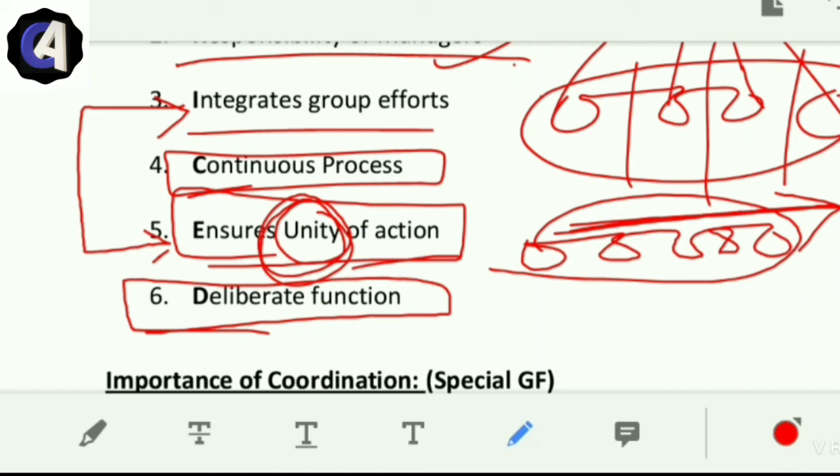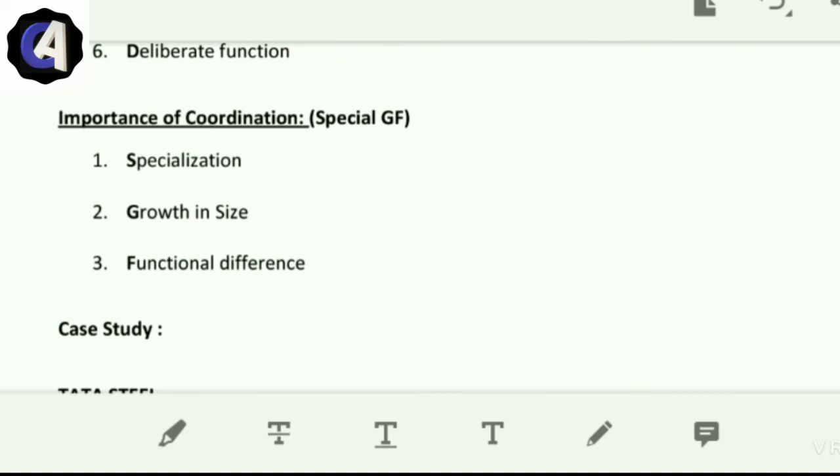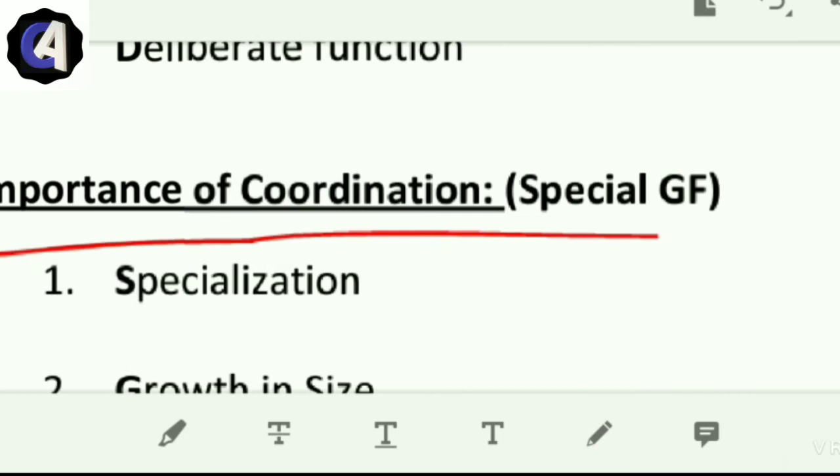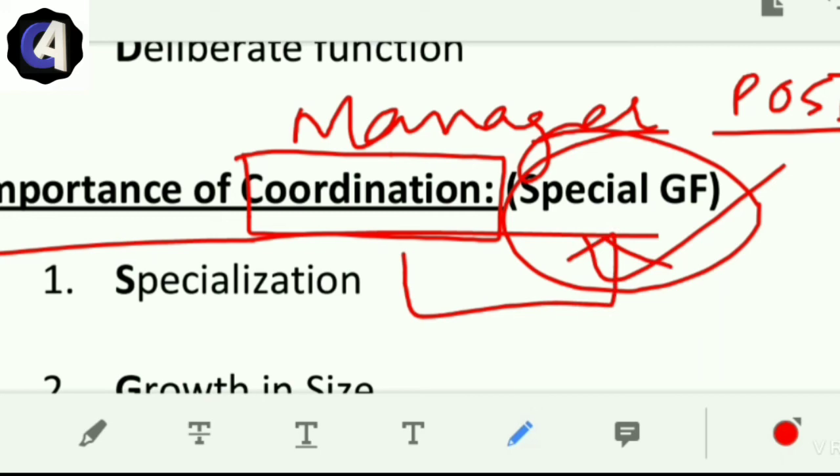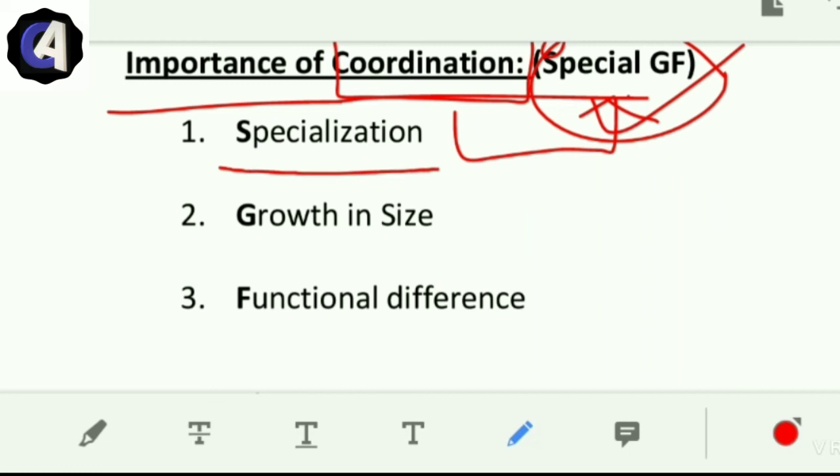I means it integrates group efforts. Many departments exist - it integrates all their efforts so together they can achieve one objective. C means continuous process - for every task you have to do some coordination with other departments. E means it ensures unity of action - integrates group efforts and ensures unity of action are somewhat similar. All departments together work toward one action, one direction - unity of action. D means it is a deliberate function. Coordination won't happen automatically just because you are a good manager who has done good planning, organizing, directing, and staffing. Even if you brought good people, if they are unable to talk among themselves and fetch information from each other, work won't get done. So it is a deliberate function - you have to coordinate between each other.